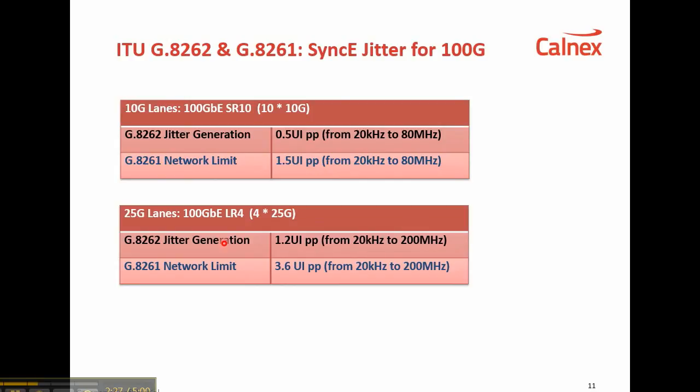A reminder that we are measuring to the G.8262 network equipment limit — that's the 1.2 UI peak-to-peak measurement shown here. There is also another limit, G.8261, which is the network limit at 3.6 UI peak-to-peak in the same measurement bandwidth. The measurement bandwidth of 20kHz to 200MHz is fixed within the Paragon 100G.